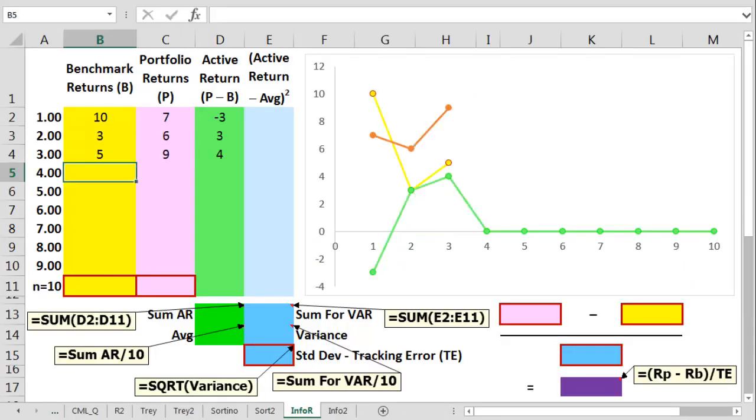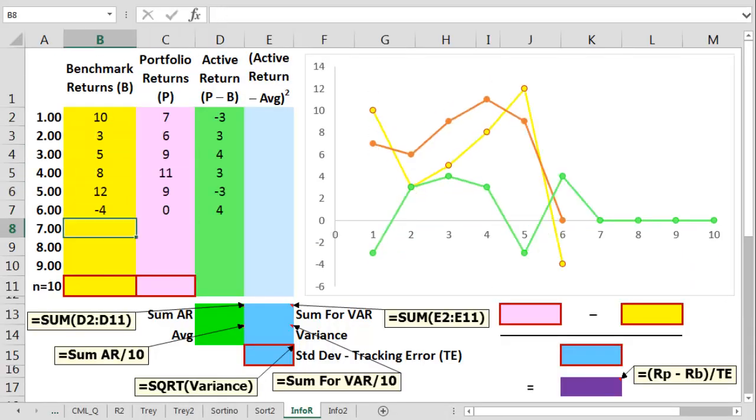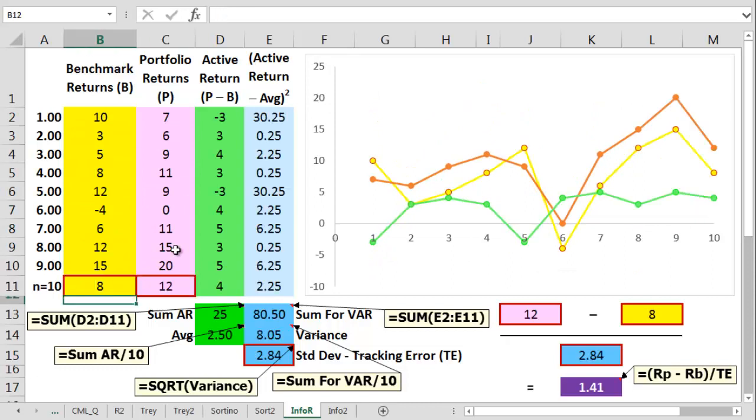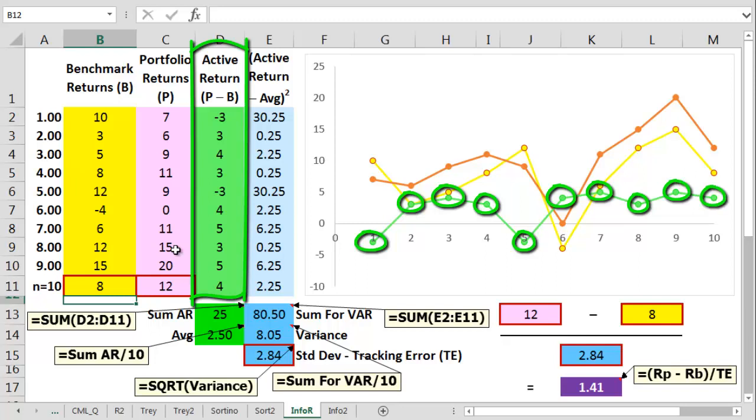Let's move these figures then over to a cunning spreadsheet. Let's see if we can figure out the information ratio. Normally you'll just get supplied with a tracking error but for fun we're going to work it out. The first thing we do is to take every benchmark return away from every portfolio return. This gets the active return for each pair.